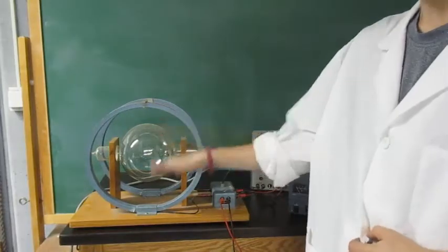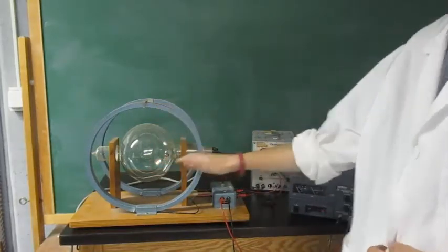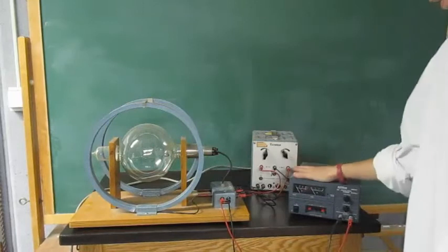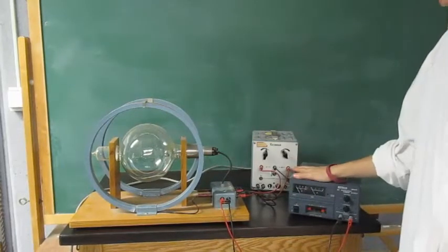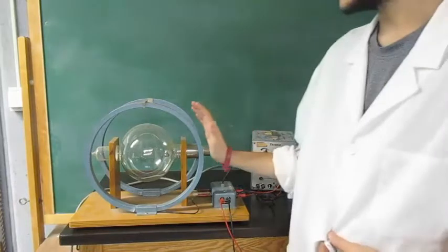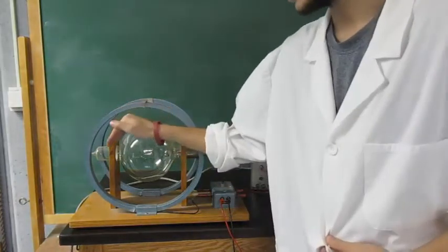And we have Helmholtz coils inside and when those coils are introduced to a voltage and a current they will produce a magnetic field that will push the electron beam.